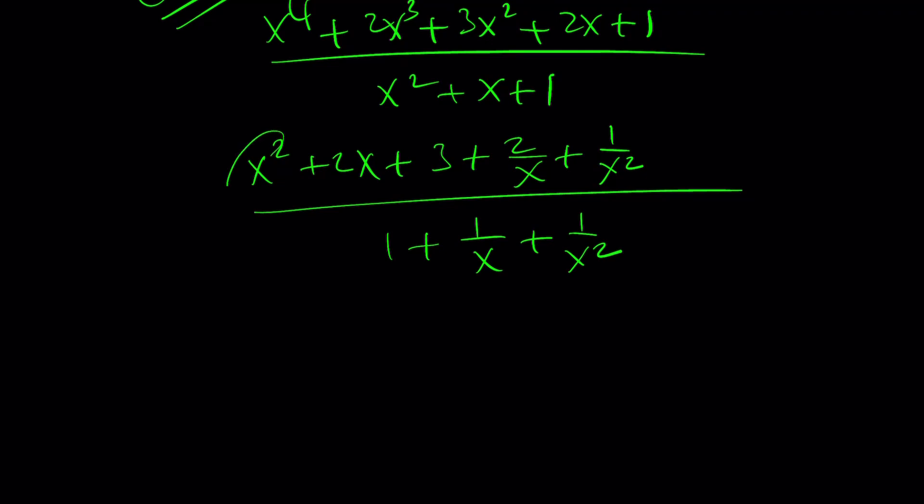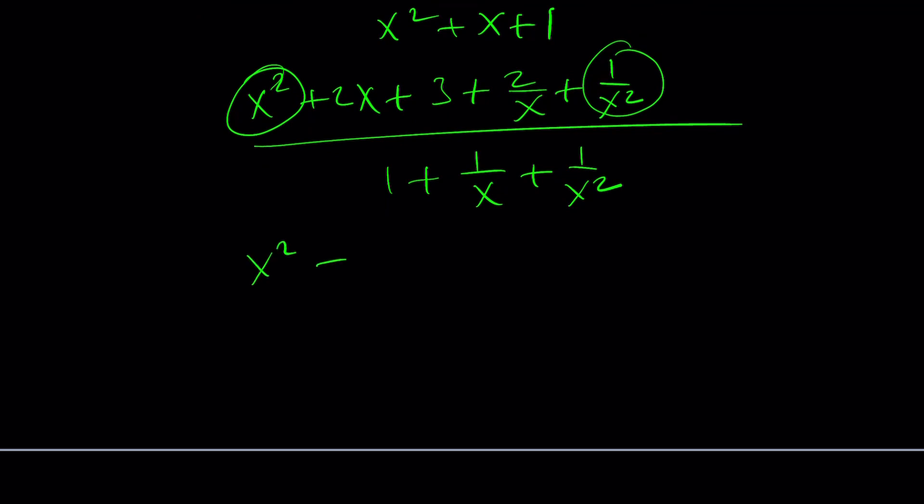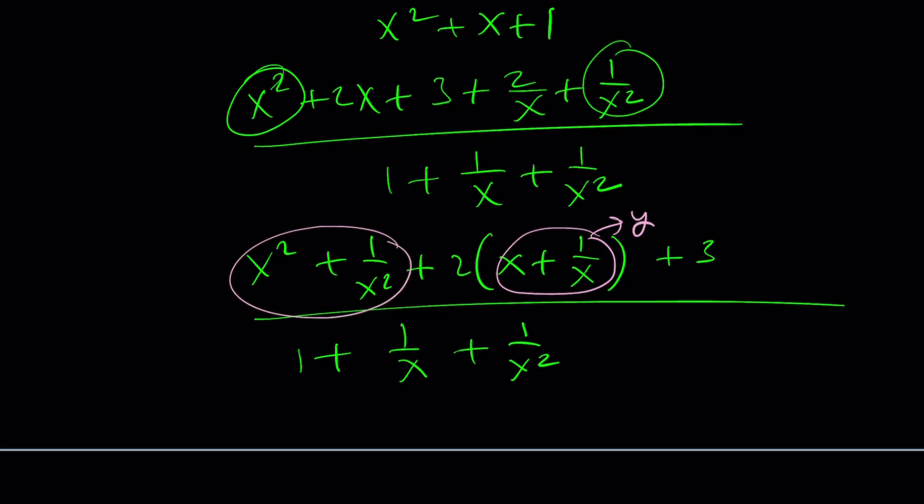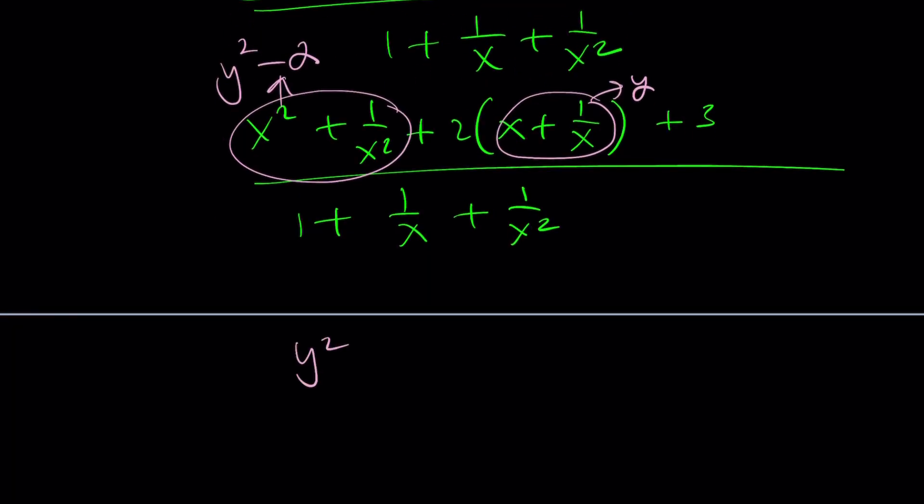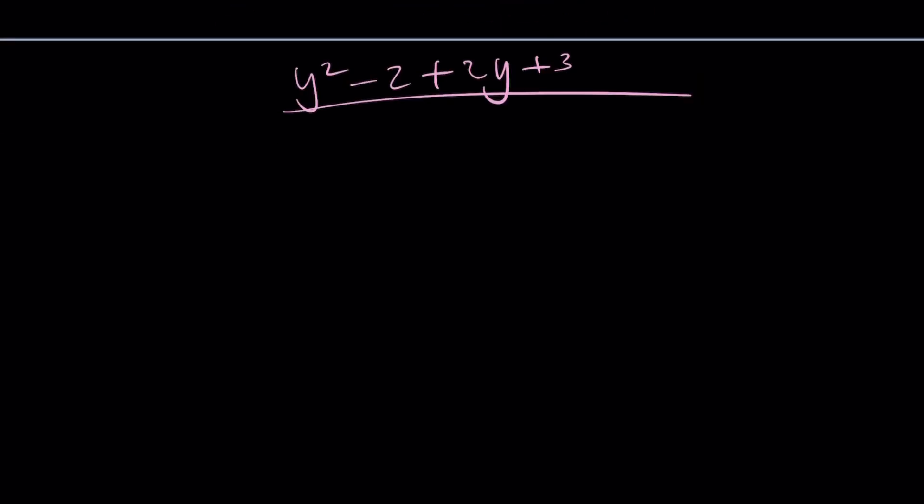And then from here, I'm going to get x squared plus 1 over x squared. And then I can kind of put those two together. And then plus 2 times x plus 1 over x plus 3. And at the bottom, I should be getting 1 plus 1 over x plus 1 over x squared, right? Here's what I'd like to do. I'm going to call this something. How about y? Let's call this y. And then this becomes y squared minus 2. Because if you square y, you're going to get an extra 2 there. So this looks like y squared minus 2 plus 2y plus 3 divided by... Now, what does this become? That's going to be an interesting one, right? Because there is no x. That's not very good. So maybe this method is not going to work. I don't know. But I just at least tried.